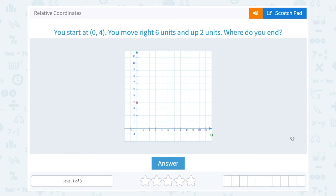Let's take a look at relative coordinates. You start at 0, 4, you move right 6 units and up 2 units. Where do you end?